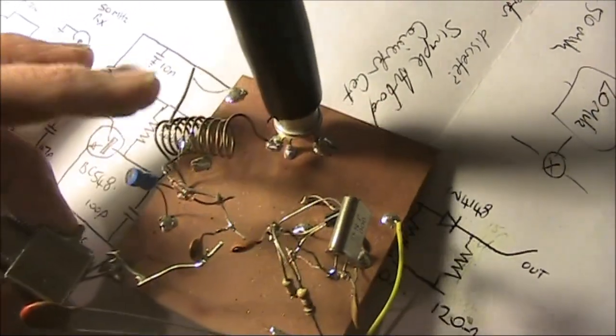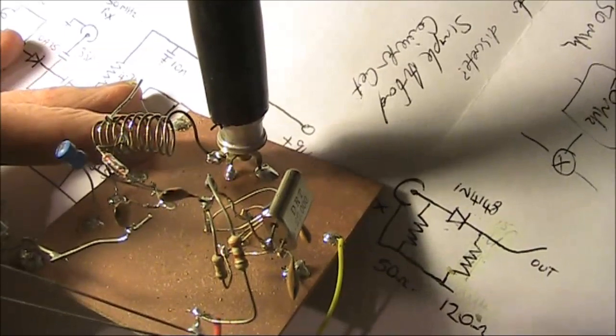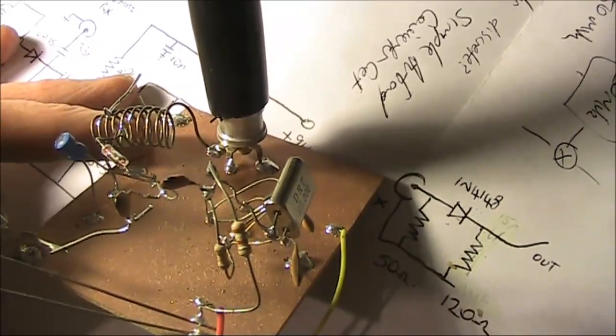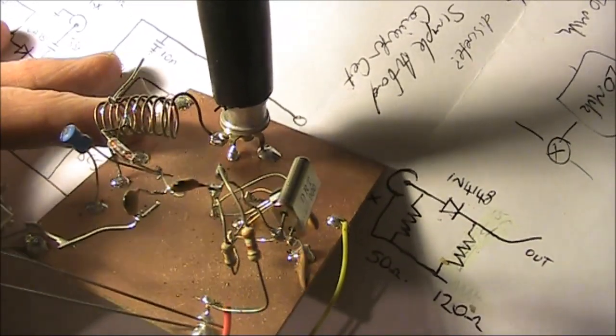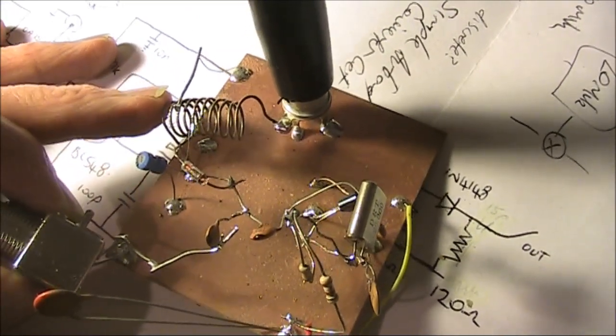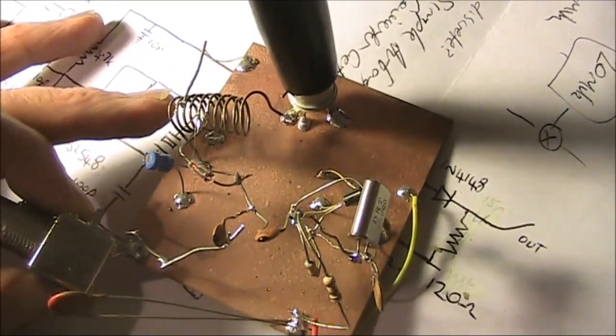The thing you see here with the black cap is actually a Beehive trimmer. It goes from 5 to 25 picofarads, and you use that when you are peaking the front end of the converter.